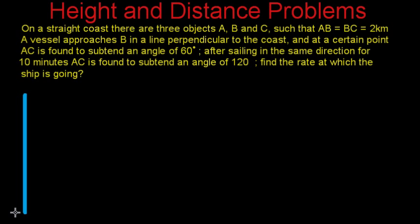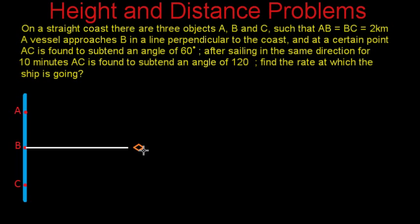Suppose this is the straight coastline and suppose three points over here are named A, B and C. There is a vessel approaching B in a line perpendicular to the coast. So this is a line perpendicular to the coast, and this is the vessel which is approaching point B in a line perpendicular to the coast.